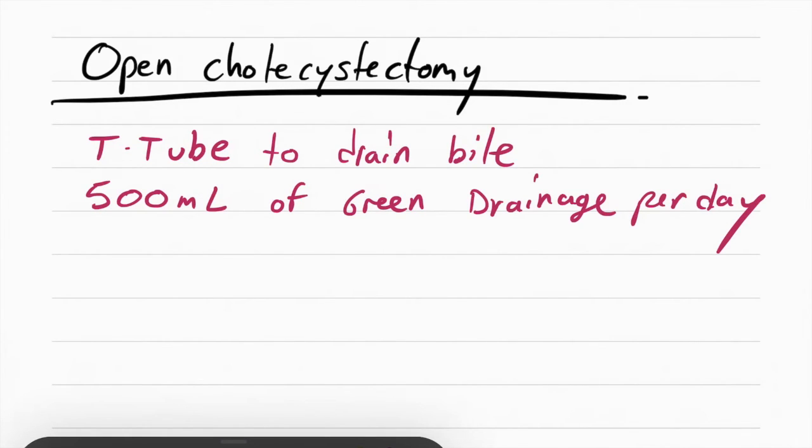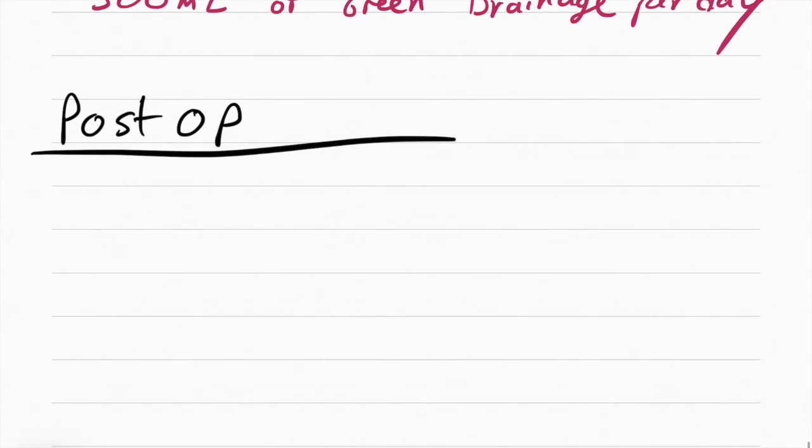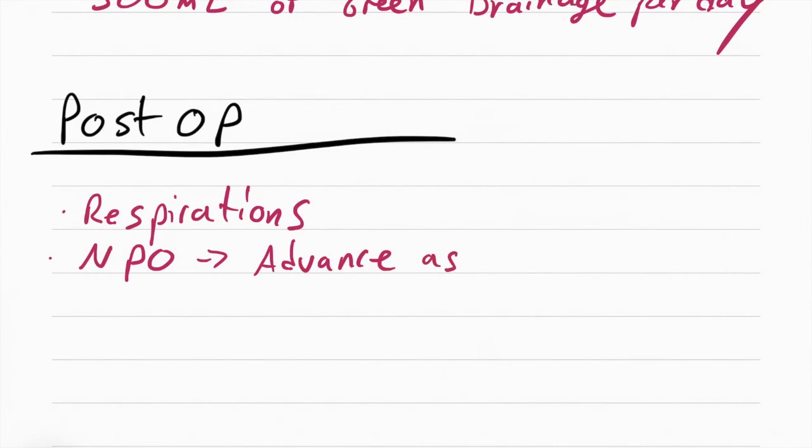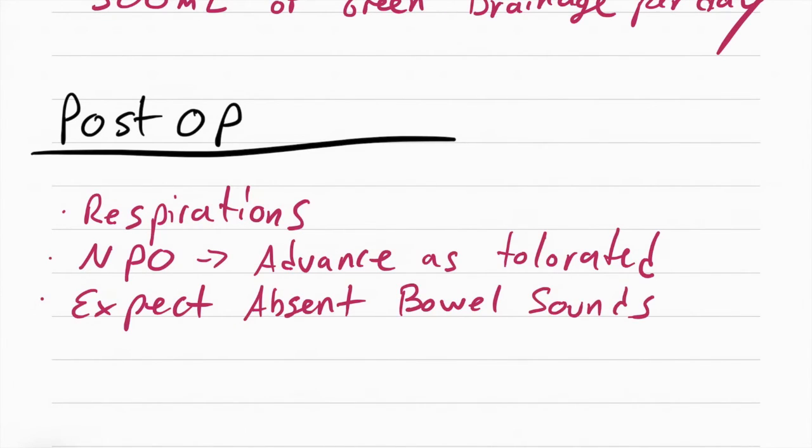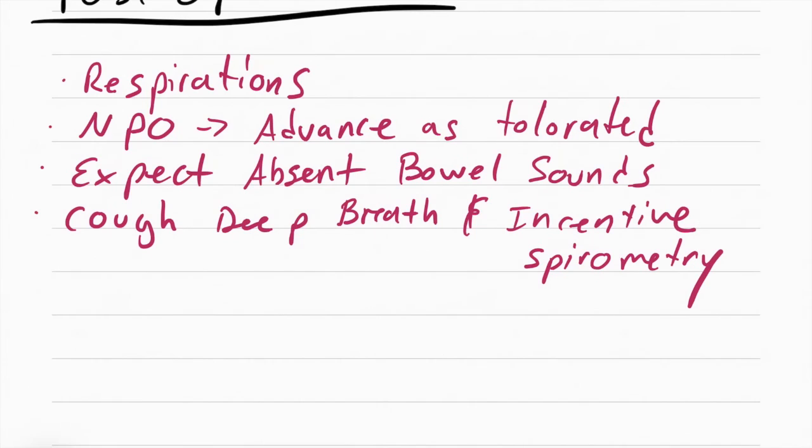Because this procedure is a lot more invasive, you make sure after the surgery you monitor respirations, make the patient NPO and advance diet as tolerated. You should expect absent bowel sounds because they just did a very invasive surgery. You also want to teach the patient to cough, deep breathe, and use incentive spirometry to prevent pneumonia. If the patient's having a hard time coughing and deep breathing, then you want to have the patient splint.